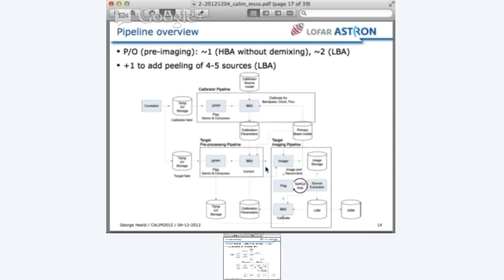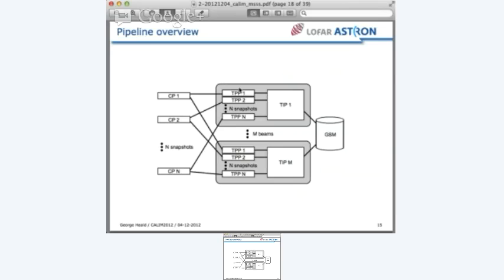Now these combine in a complicated way because we have multiple beams per snapshot and multiple snapshots per field. This is why the pipeline has to be somewhat complicated—it has to do all the bookkeeping to make sure the pieces are stuck together the right way. Each calibrator calibrates M target observations. There's M beams per observation. Then the various snapshots are combined into single fields. In the case of LBA, N equals 9 and M equals 2 or 5. For the HBA, N equals 2 and M equals 3 or 6. Then this is all fed into the imaging pipeline and eventually goes into the Cold Sky model after source extraction.